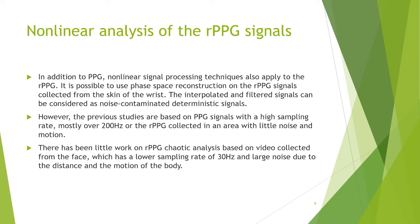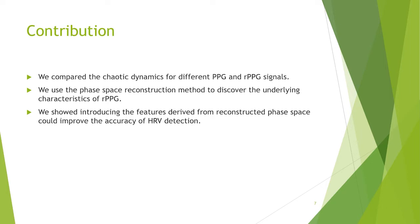However, the previous studies are based on PPG signals which have a high sampling rate, mostly over 200 Hz, or RPGs collected in areas with little noise and motion. There has been little work on RPG chaotic analysis based on video collected from the face, which has a lower sampling rate of 30 Hz and large noise due to the distance and motion of the body. In this research, we present an analysis of the chaotic dynamics of RPG collected from human face videos.